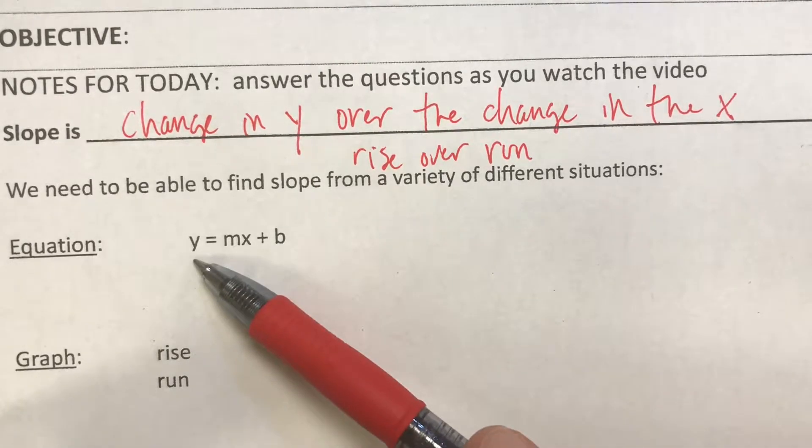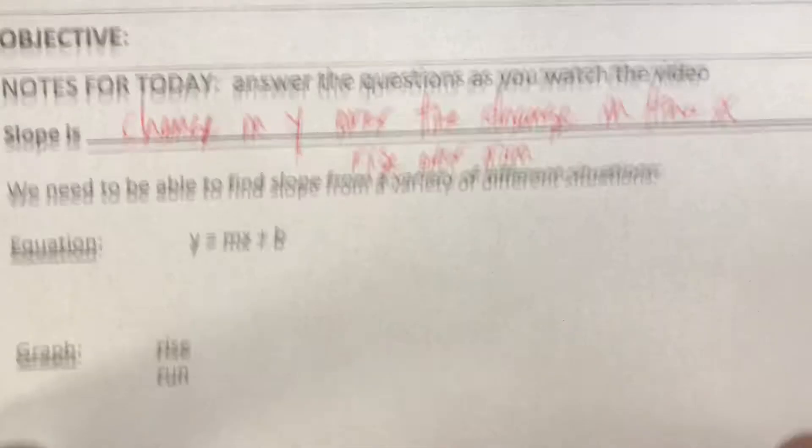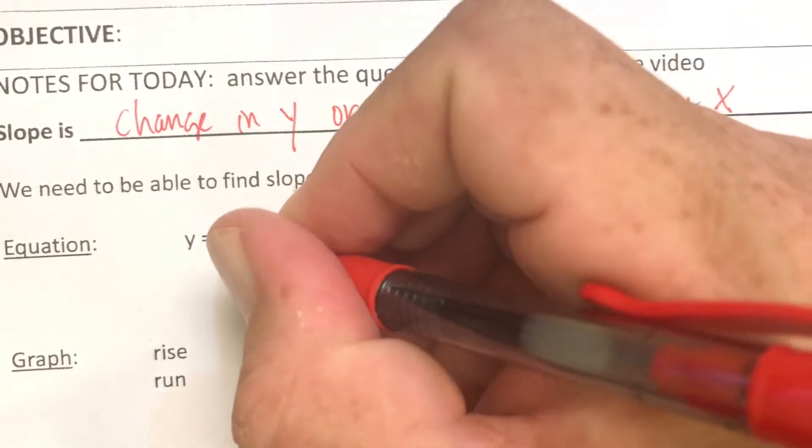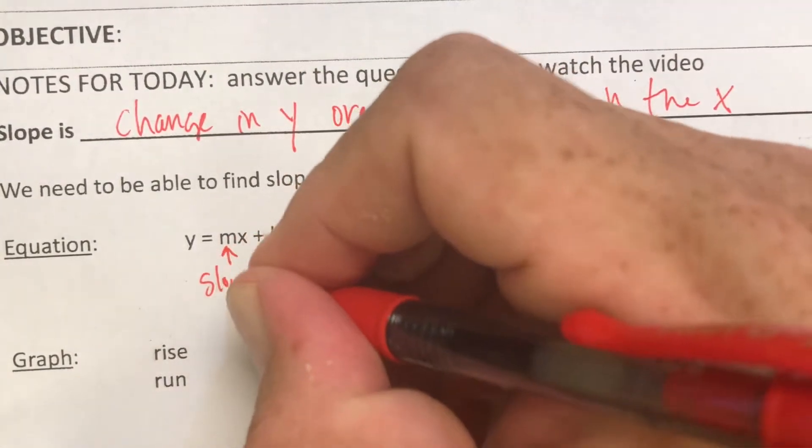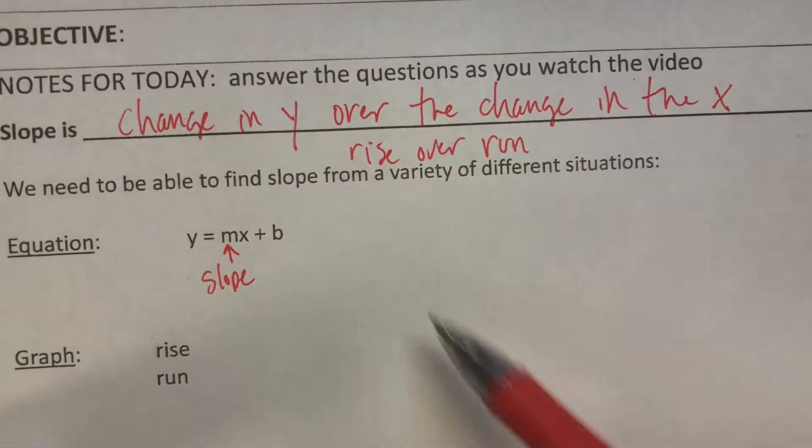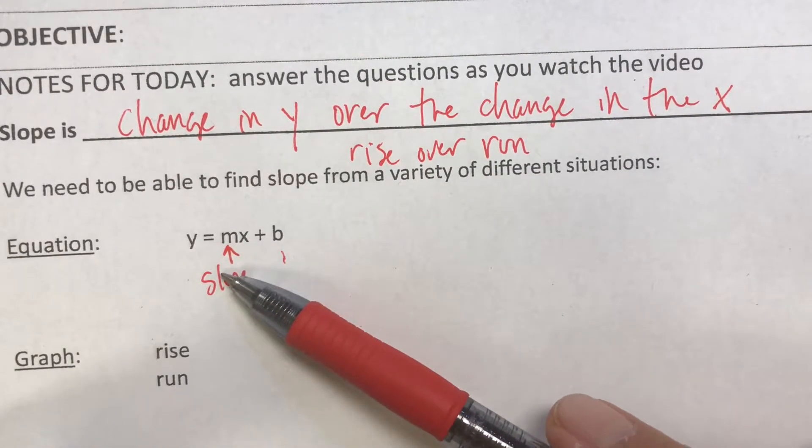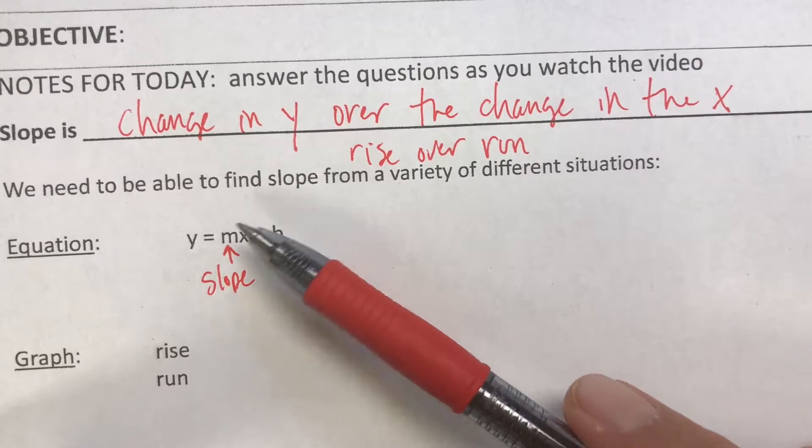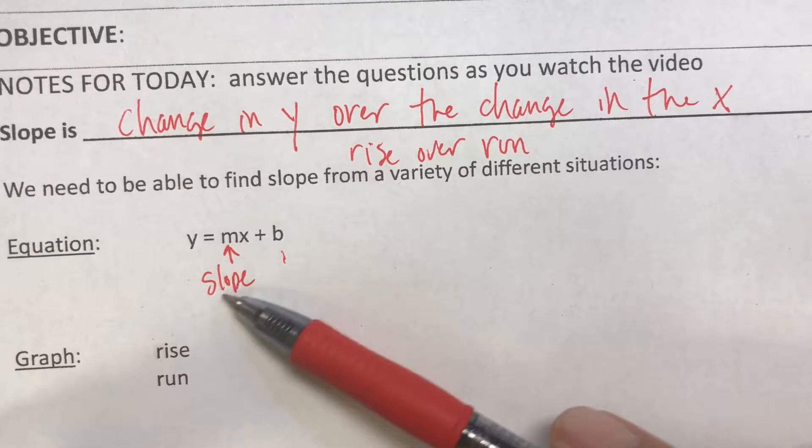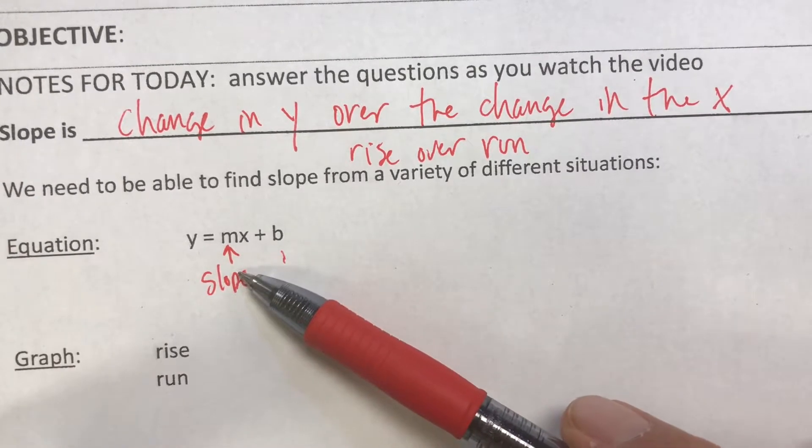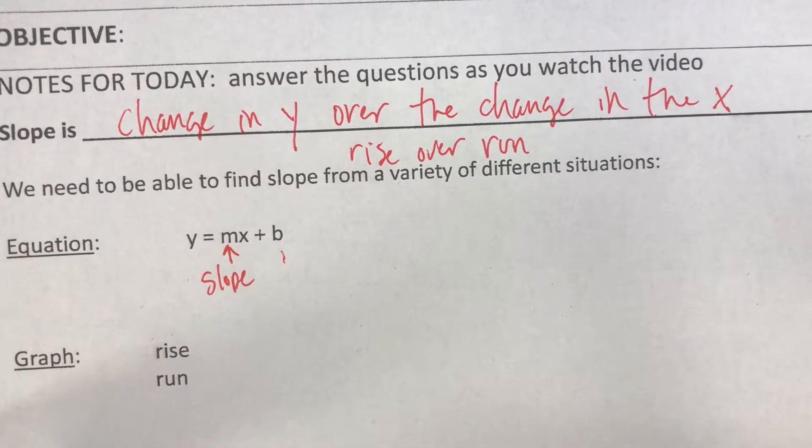The first one to talk about is an equation, where the slope is represented by the m value. The b number is our y-intercept. But slope tells us how it's going to change: every time x goes up one, the y number is going to go up by however many the slope is. Next we have a graph.